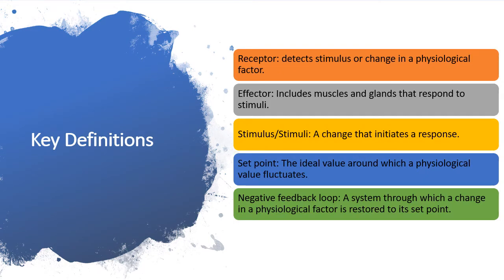Before we go in, I want to zoom in on some definitions you certainly have to know. When we discuss homeostasis, we talk in terms of receptors, stimulus, effectors, a set point, and the negative feedback loop. A receptor is what detects a stimulus or a change in a physiological factor. For example, if you walk into a very hot room, the hypothalamus detects the change in temperature and sends signals to different parts of the body to respond.